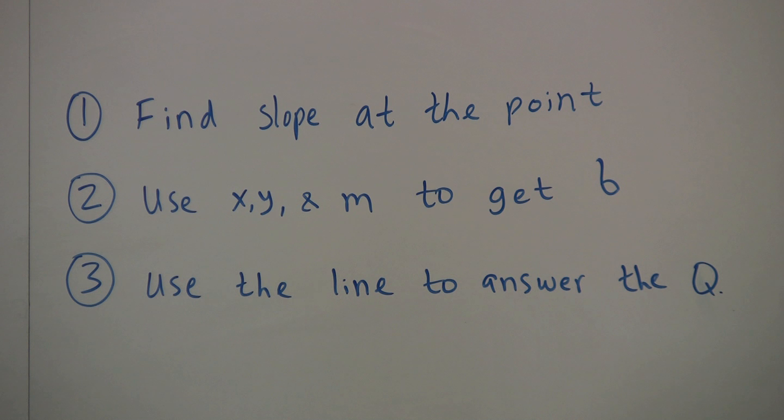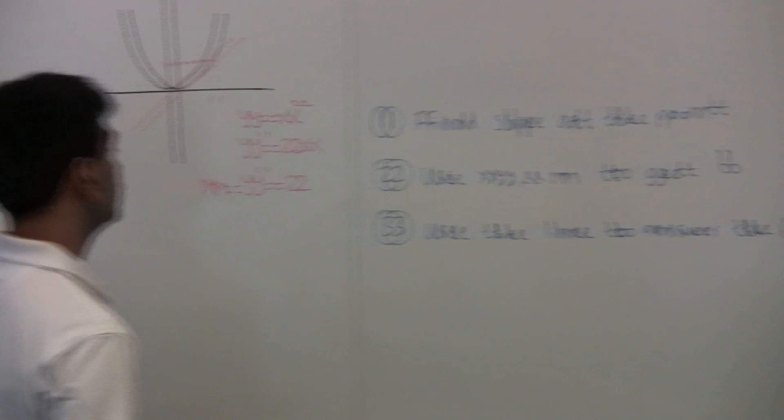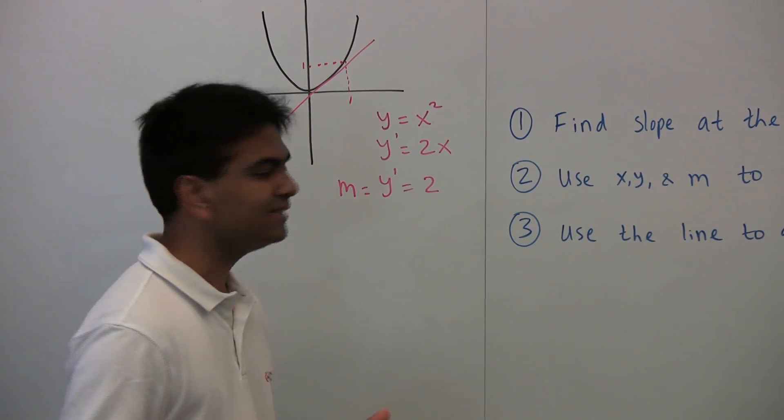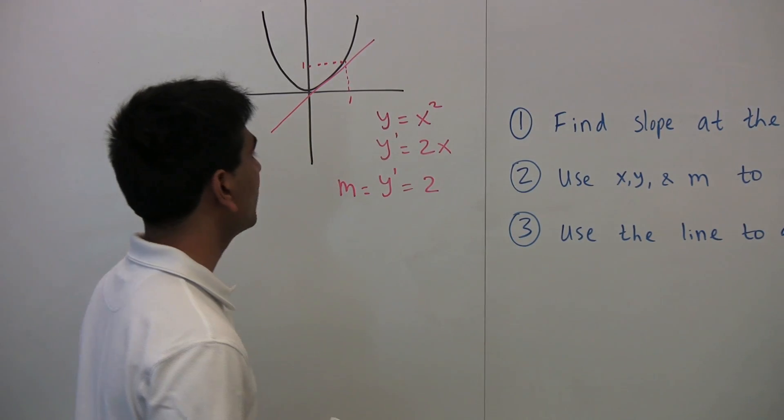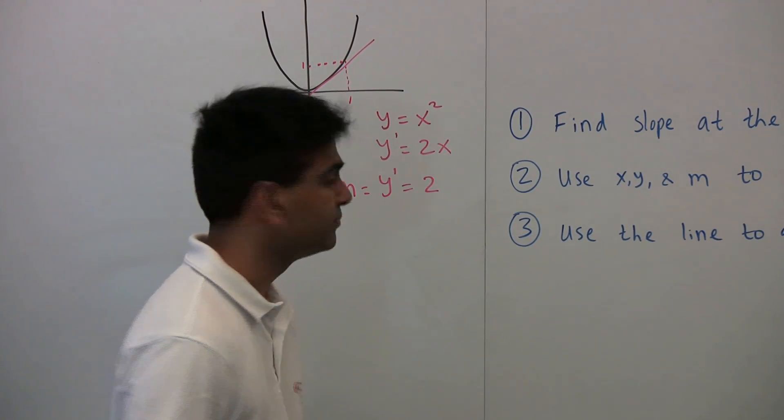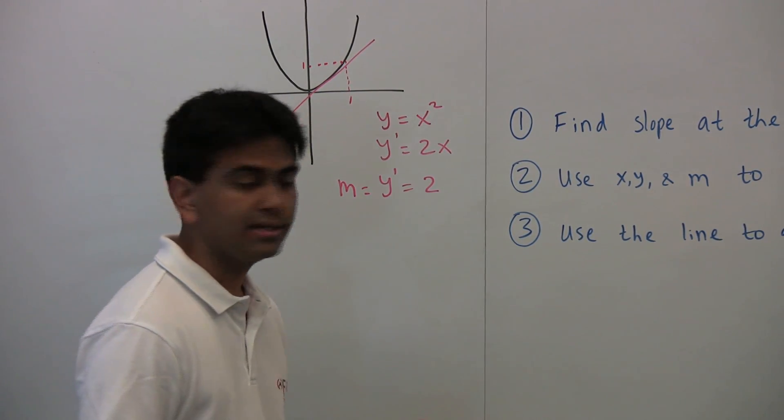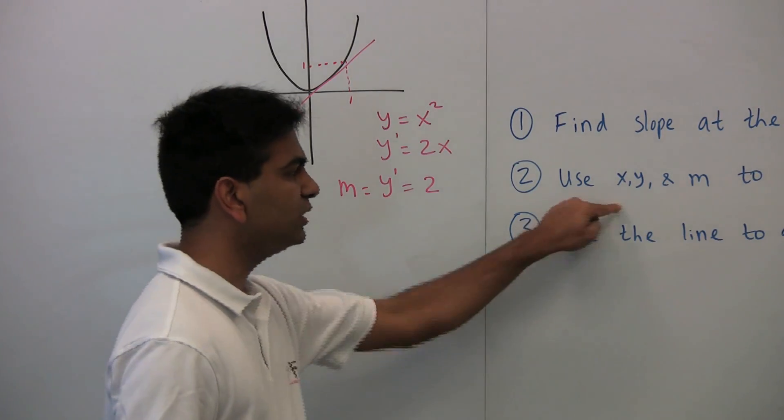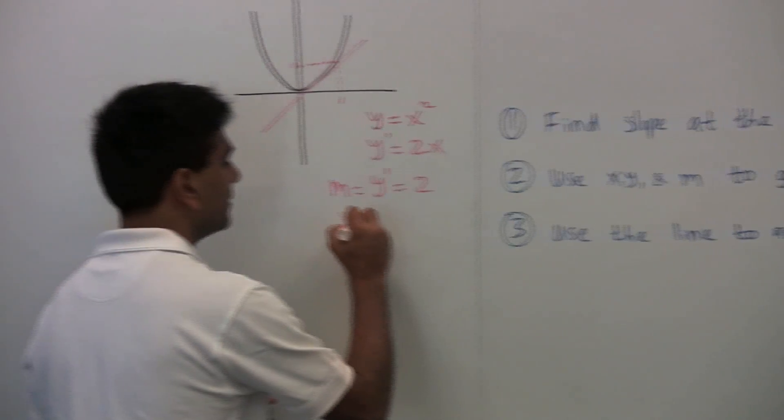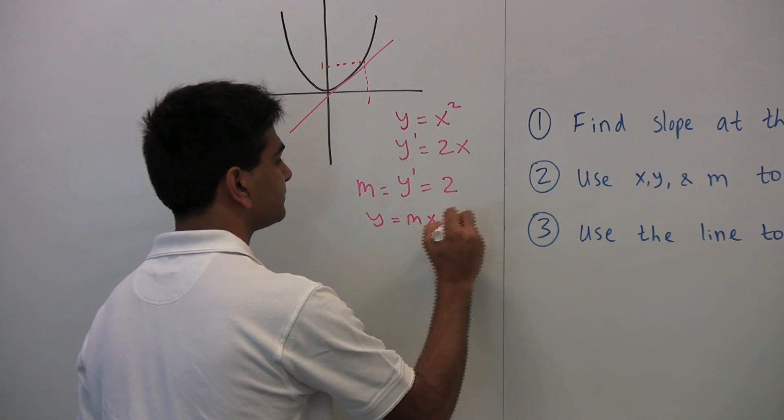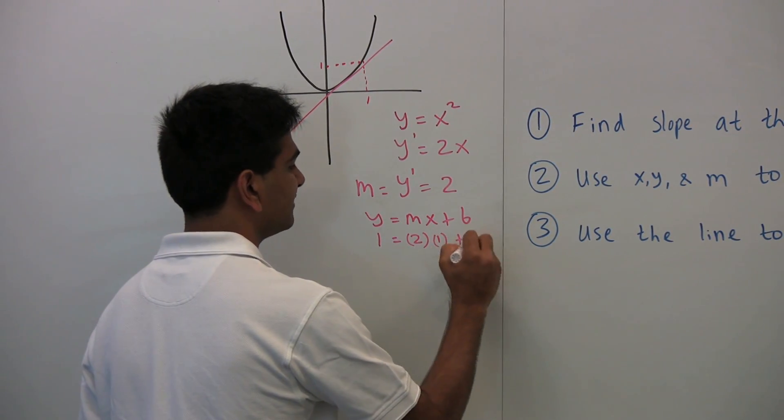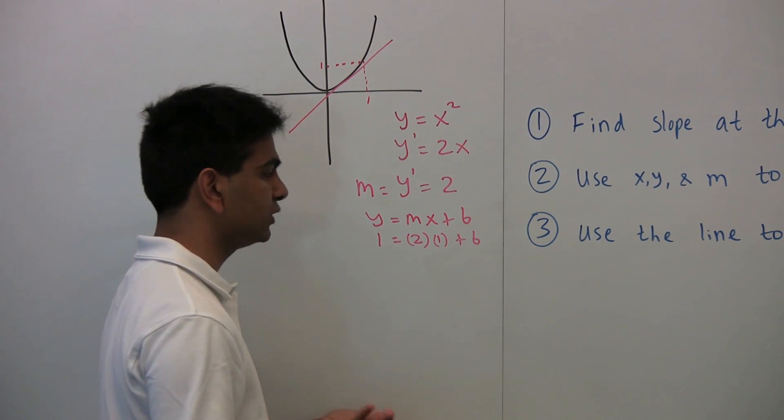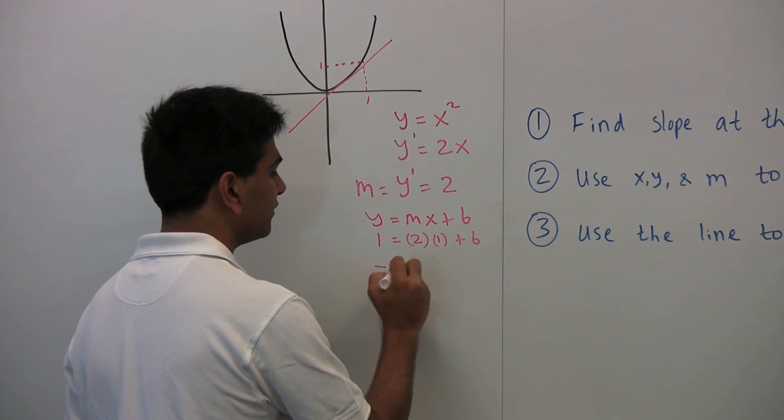Now the second step is using that slope and the x and y points to get b. Now generally, you'll probably only be given the x value, but you can easily plug that into the function to get the y value at that point. In the parabola, we notice that when x is 1, y is also 1. So we pretty much know that x is 1, y is 1, and that m is 2. We can use this to get b in the equation y equals mx plus b. So 1 equals 2 times 1 plus b. So this will just be 2, subtracting 2 from both sides. We get negative 1 equals b.